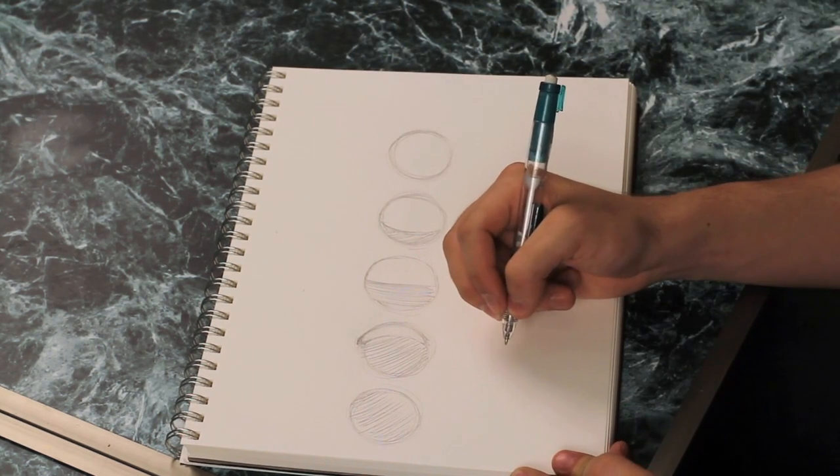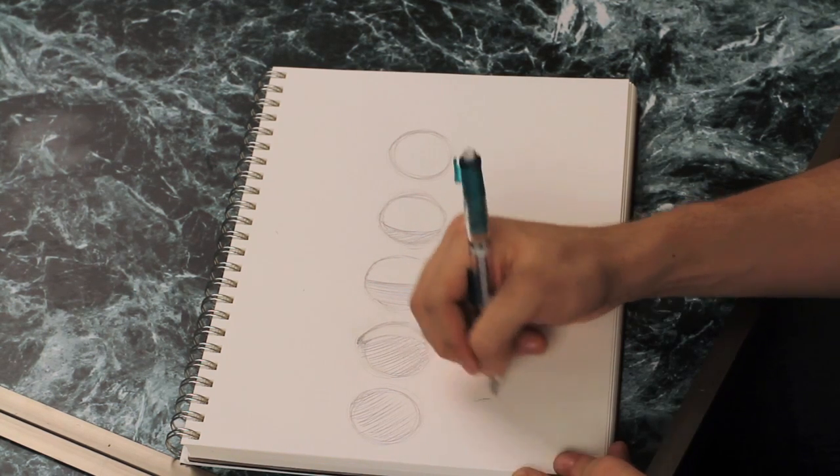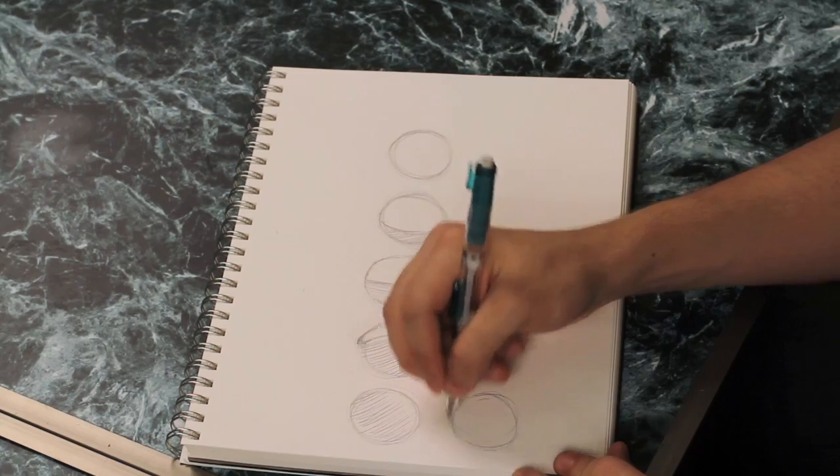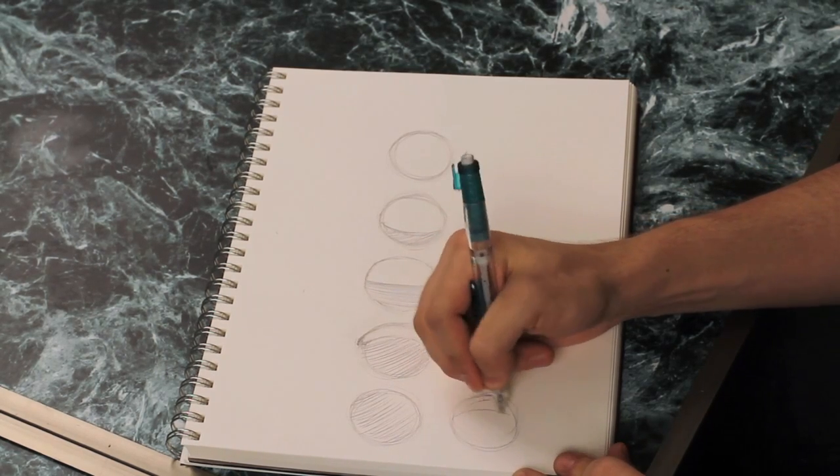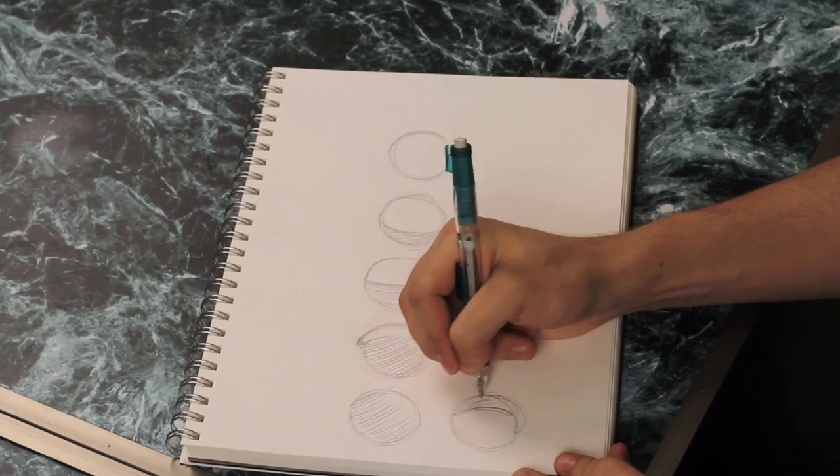Then we get into the waning side, which is the moon going away. We have the waning gibbous, which is going to be a sliver of darkness coming into the moon.